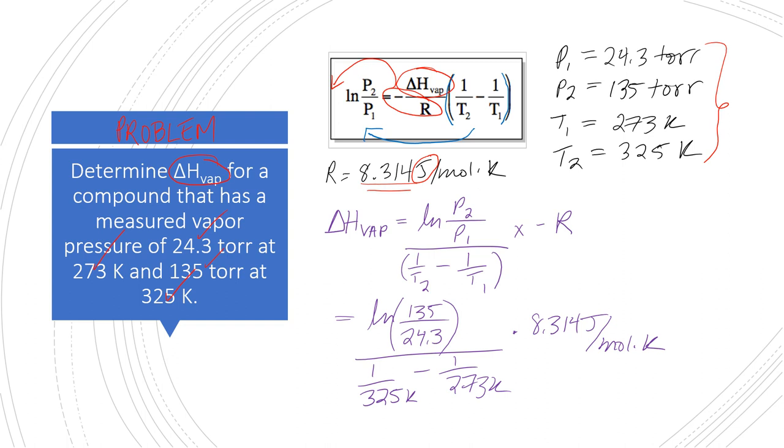What's going to cancel? Kelvin's going to cancel. So we can cancel that out and know that we are going to be left with an answer that is in joule per mole. Okay, now you're on your own with your calculator on this one.